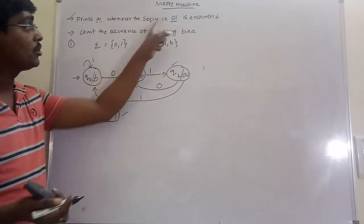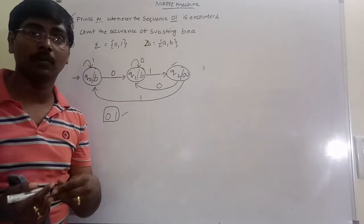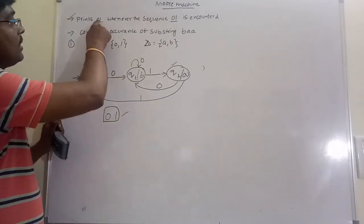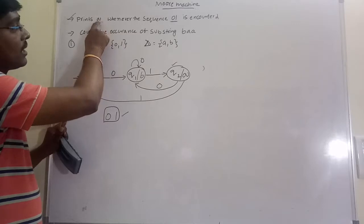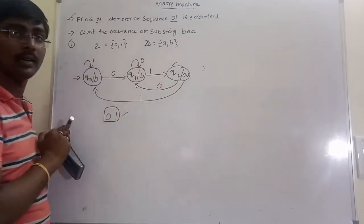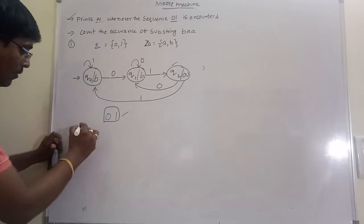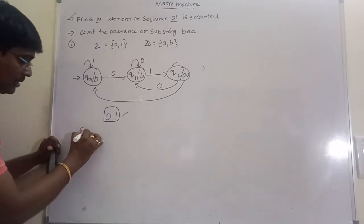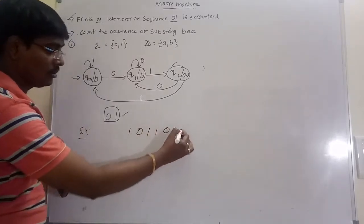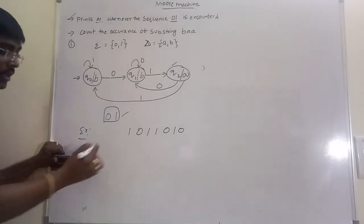First, consider the DFA for the given problem. Once the DFA is constructed, check the case: whenever the sequence 0-1 occurs, it produces the output. For example, consider the string 1-0-1-1-0-1-0 and trace it through the machine.